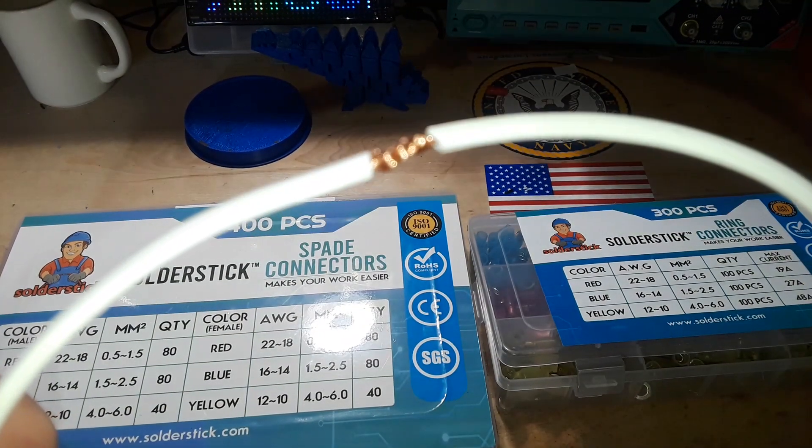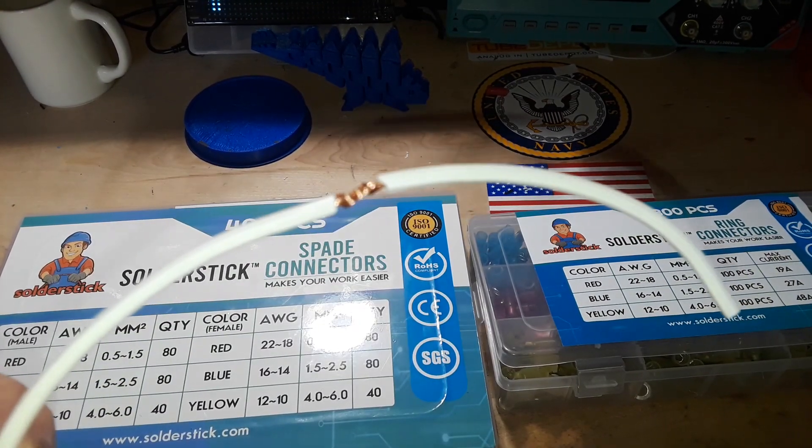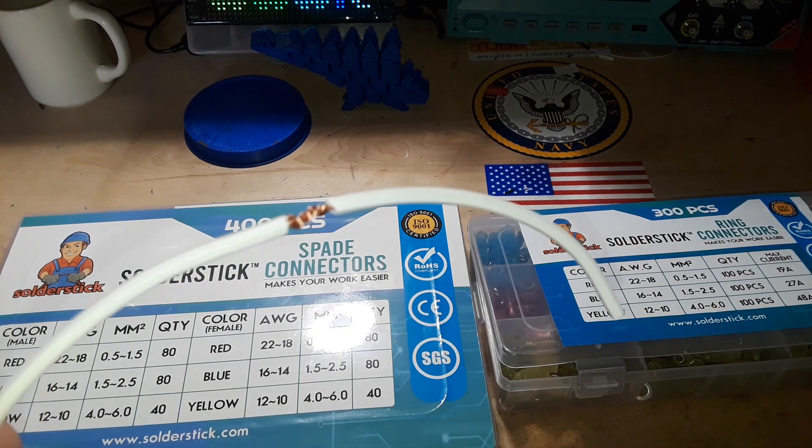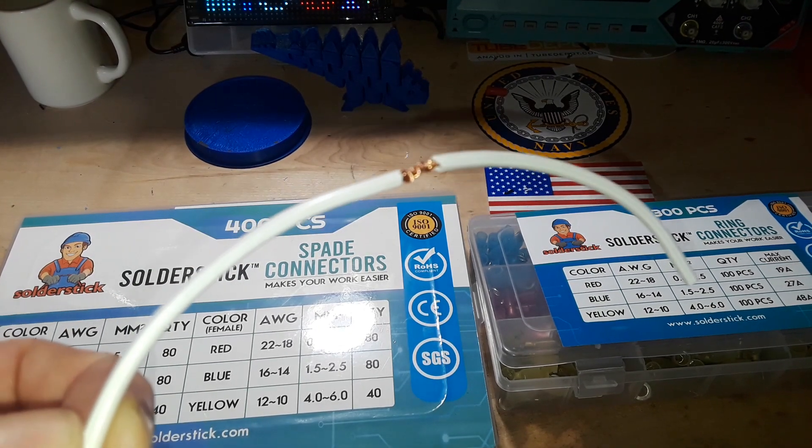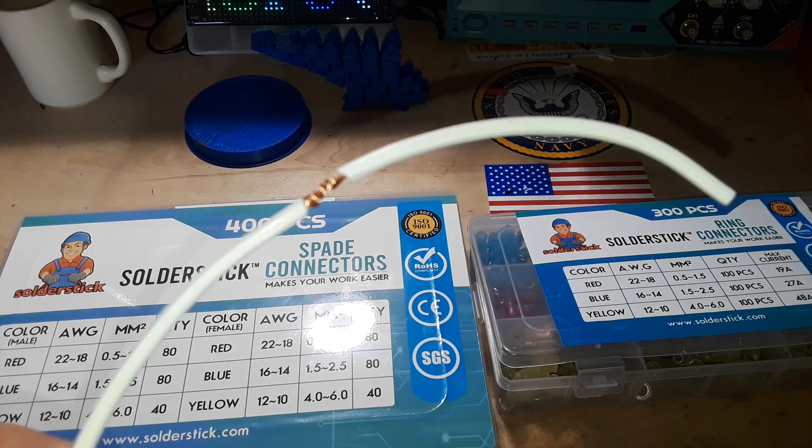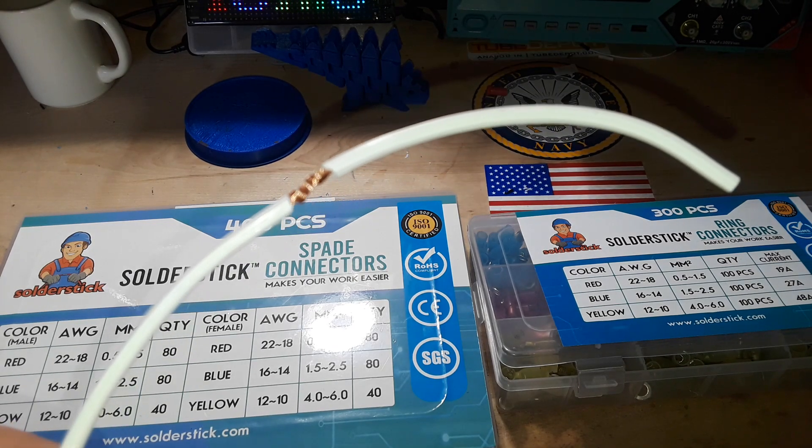We've all been there, right? We've all spliced a set of wires together and either use some electrical tape or a wire nut or something to connect them together. There's always a better way. If you need them permanently connected, I suggest the solder stick solder connectors where you heat them up with a heat gun and they melt together.